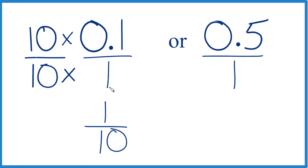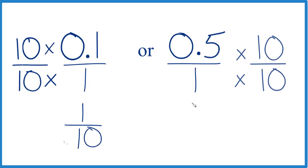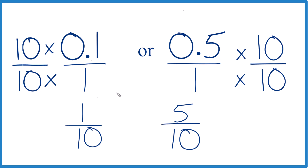So we're only multiplying by 1. Ten times 0.1 gives us 1, and 10 times 1 is 10 — so 0.1 is the same as 1 tenth. Do the same thing for 0.5: 0.5 times 10 gives us 5, and 1 times 10 is 10. Now that we have the same denominators, just compare the numerators: 5 is greater than 1, so 5 tenths is greater than 1 tenth, just like 0.5 is greater than 0.1.